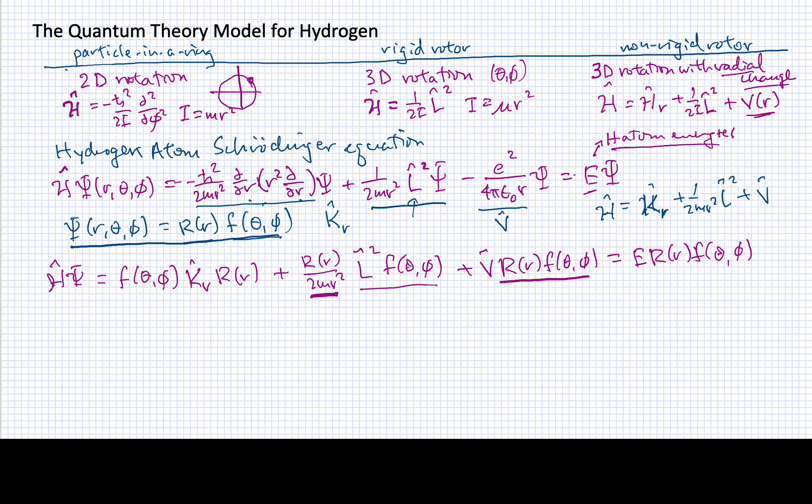I'm also going to divide through by the product of these two functions. I hope you can follow what I'm doing. I'm taking 2mr squared times my Hamiltonian operating on this operator and dividing by that wave function.